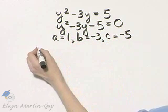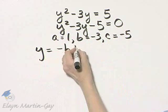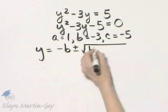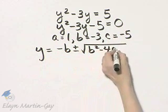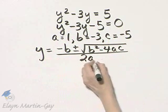So y is equal to, by the quadratic formula, negative b plus or minus the square root of b squared minus 4ac all over 2a.